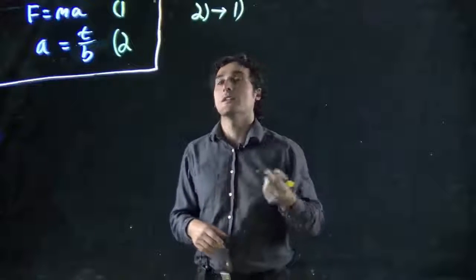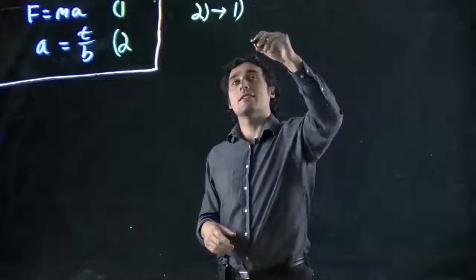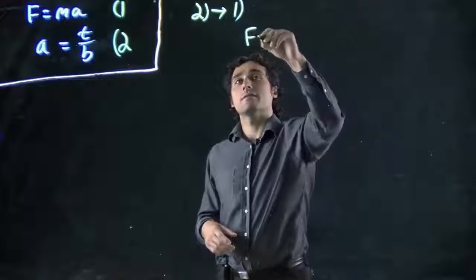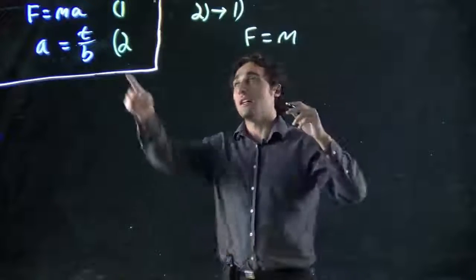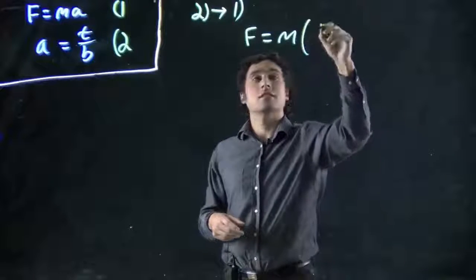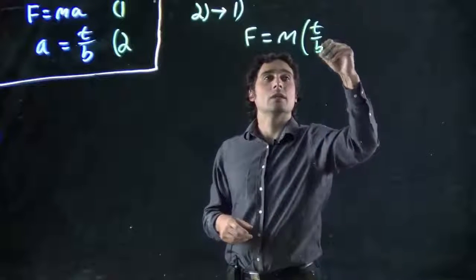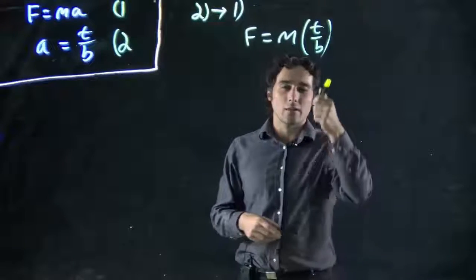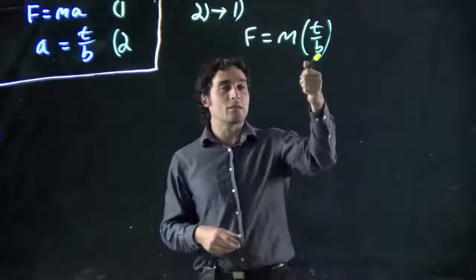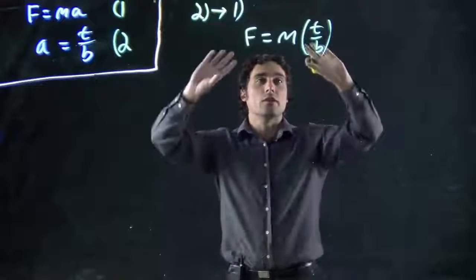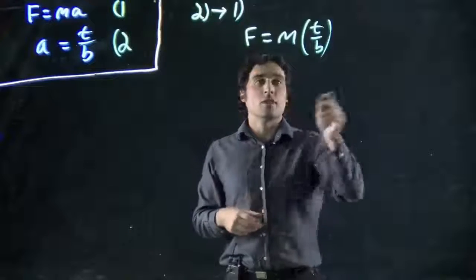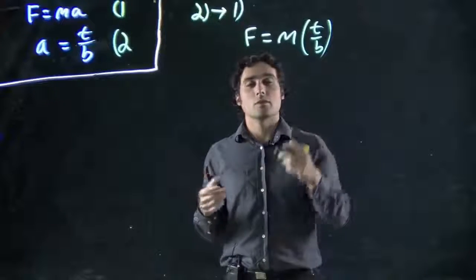That's the notation I'm going to use. So we had F equals MA. F equals M. Well, instead of A, we're going to write T over B. Then we want to solve for B. Right now B is on the bottom. Remember, if we want to, we can do the inversion method or flip and flip. And then bring the other one over.